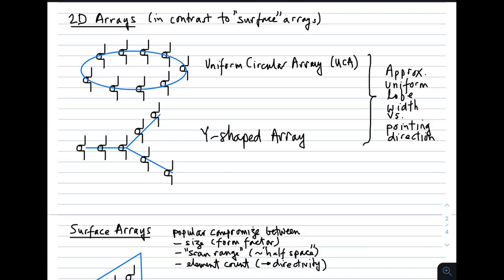Another category of arrays I refer to as two-dimensional arrays. To be clear, later on we're going to talk about surface arrays, and that's not what I mean here. Two canonical examples are the uniform circular array, in which you arrange elements in a circle, and the Y-shaped array. In these arrays, the advantage is you get approximately uniform lobe width. The lobes that are formed have about the same shape no matter which direction you point them. These are geometries you might consider if it's important to have uniform lobe width as you scan the beam around.